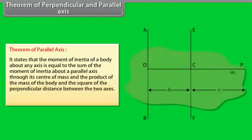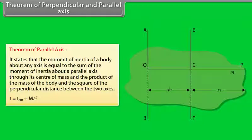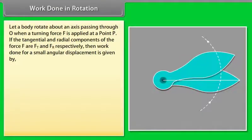The theorem of perpendicular axes states that the moment of inertia of a plane lamina about an axis perpendicular to its plane equals the sum of its moments of inertia about two mutually perpendicular axes lying in its plane: Iz = Ix + Iy. The theorem of parallel axes states that the moment of inertia about any axis equals the moment of inertia about a parallel axis through the center of mass plus m·h²: I = I_cm + m·h².